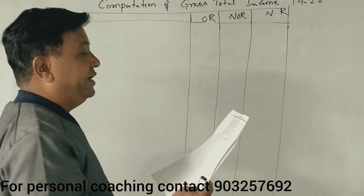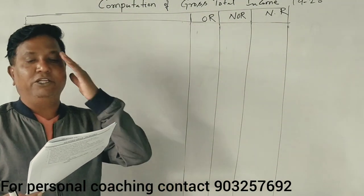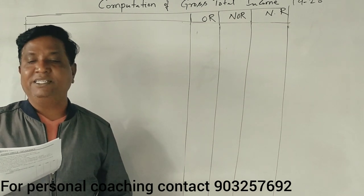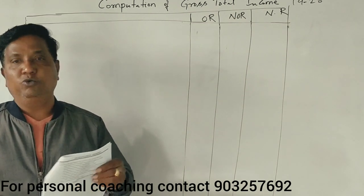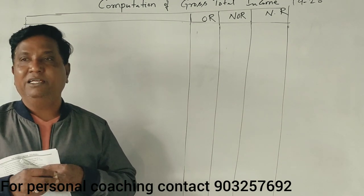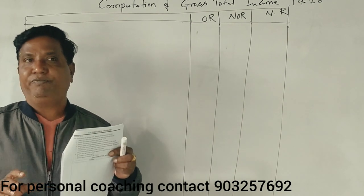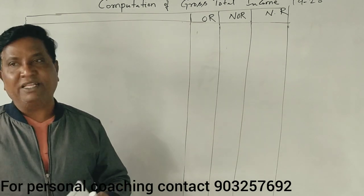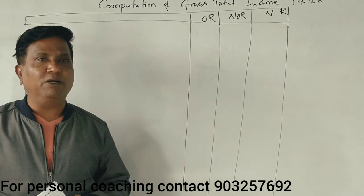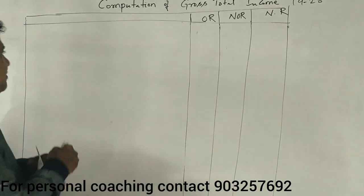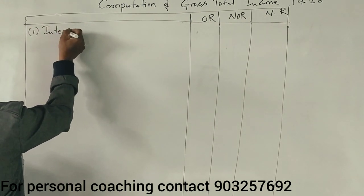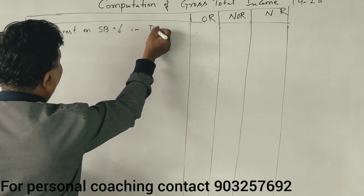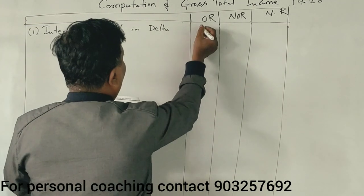The following are the incomes of Mrs. Nischal from the financial year 19-20. First adjustment: interest on savings bank deposits in S.B.M. Delhi — ₹1,200. Any interest on deposits from any bank is taxable. Interest on S.B. account in Delhi, amount ₹1,200.